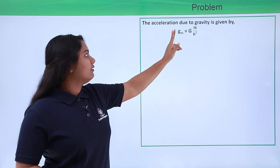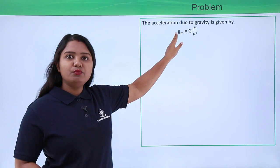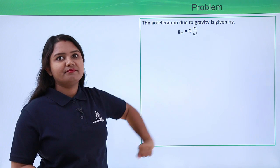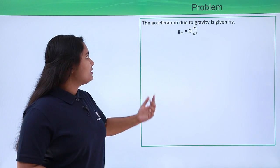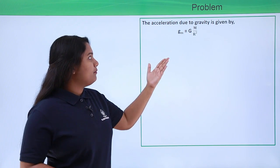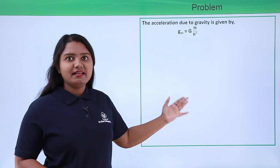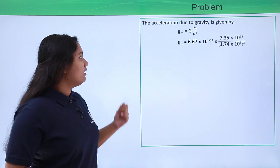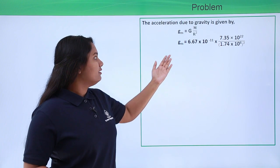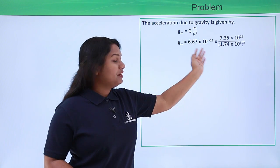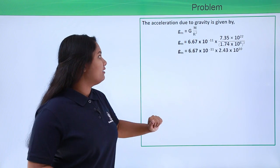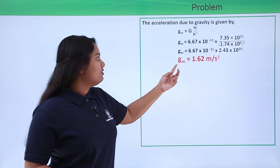Now here I have taken the acceleration due to gravity for moon to be gₘ. So we will be substituting the values of G, M, and r² in the right-hand side of this expression. Now on doing that we have this, and on solving or evaluating this we will arrive at a value.